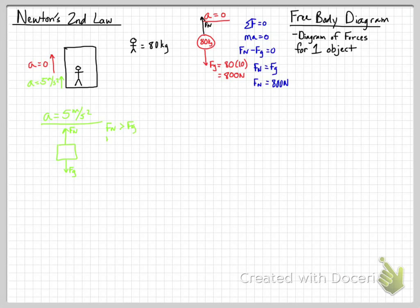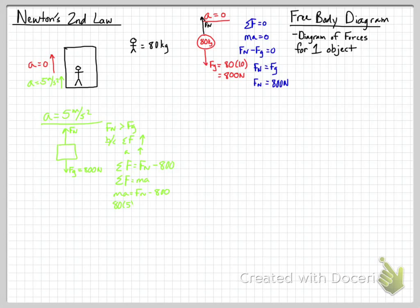Fn should be greater than Fg, because the net force is up and acceleration is up. Weight is 800 newtons. The net force equals Fn minus Fg, which also equals mass times acceleration. Setting both equal: MA equals Fn minus Fg. So 80 times 5 positive equals Fn minus 800. That's 400 equals Fn minus 800. Adding 800 to both sides gives us a normal force of 1,200 newtons.